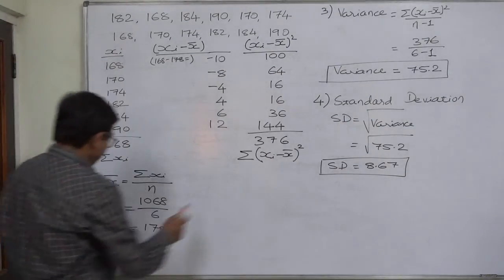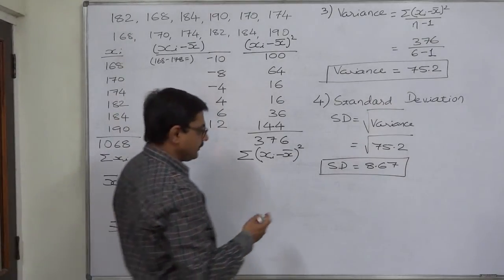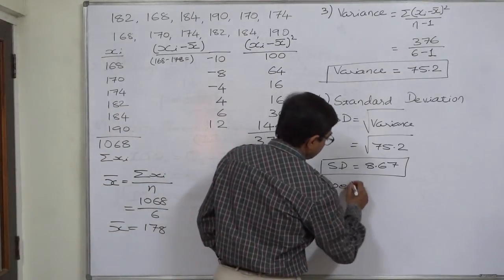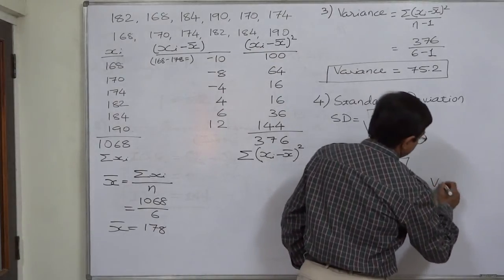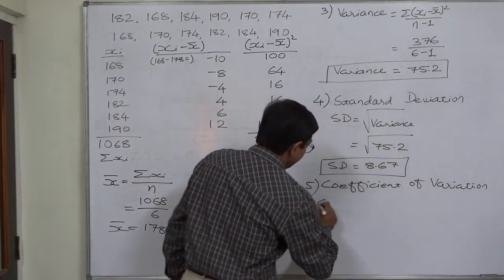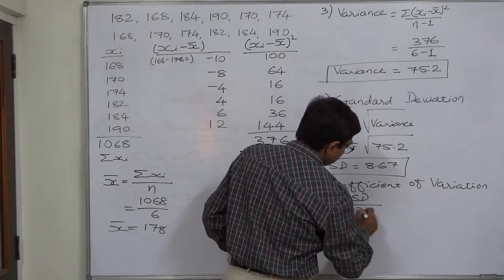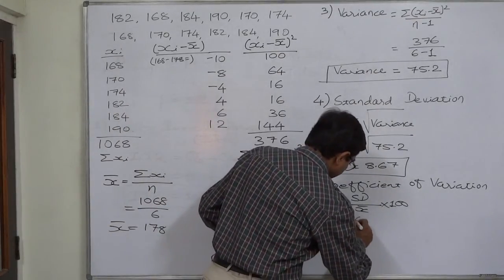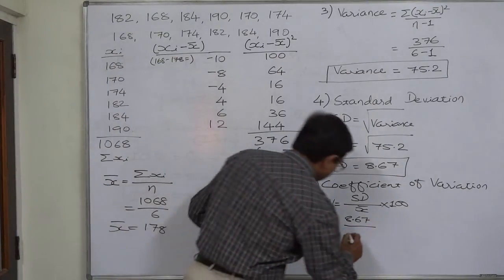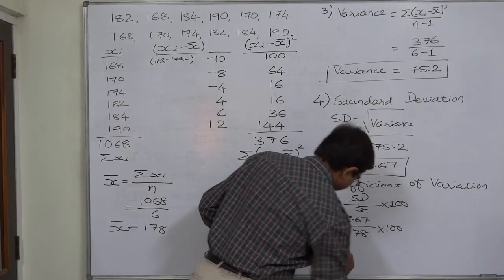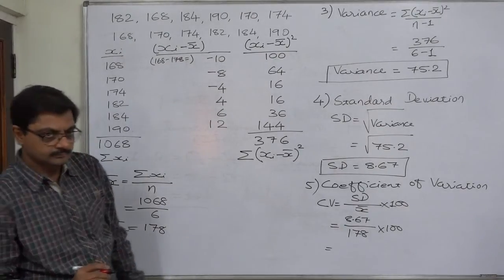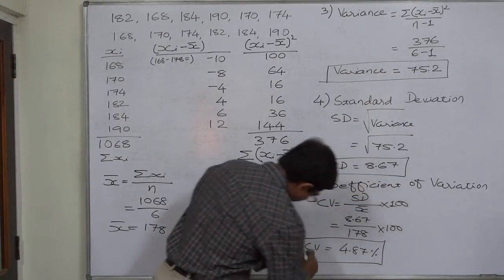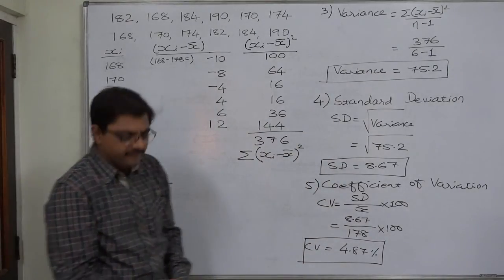On the basis of standard deviation and mean, we can calculate the coefficient of variation, popularly known as CV. CV is the percentage of standard deviation to the mean: CV = (standard deviation / mean) × 100. In our case, standard deviation is 8.67 and mean is 178, so CV = (8.67 / 178) × 100 = 4.87%. That means in this data, the standard deviation is approximately 4.87%, or roughly 5%, of the mean.